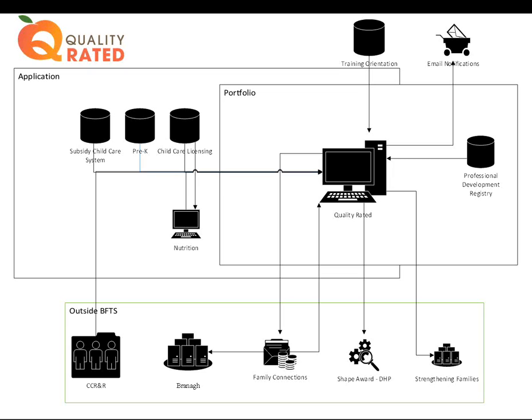If you look at the Quality Rated computer, directly under it is an icon that shows our Shape Award, an award given by our Department of Public Health. Quality Rated will, through a web service, give the Department of Public Health information about the scores a program has received specifically in the nutrition and physical activity area. Those scores will be evaluated by the Department of Public Health so that the program could receive an add-on certification from them.